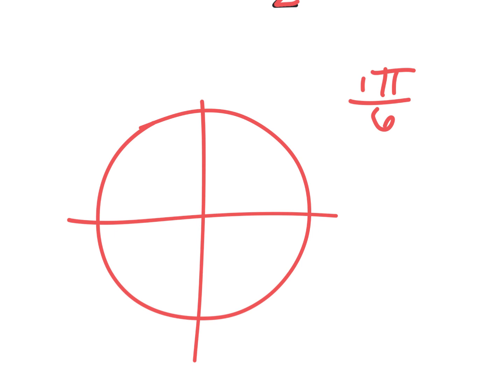By having a chance to talk to the kid next to you, I hope we cleared up some of your confusion. That's where pi is. But in this context, one pi over six was right here. Then would you please label two, three, four, five, and six pi over six?